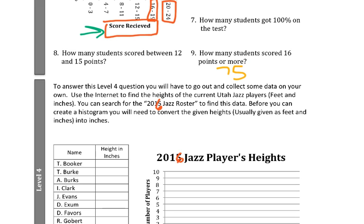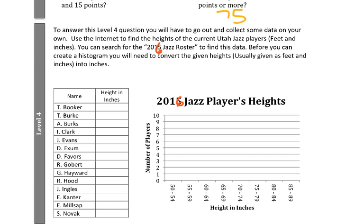To check out the Jazz roster for the 2016 season and to fill out the heights in inches. When I looked up the roster, it was telling me things like, let's say that T Booker was 6'6". We need to make sure that we convert this 6'6" into just inches. The way that you would do that is you would take your feet number, so 6, multiply that by 12 because there are 12 inches in a foot.